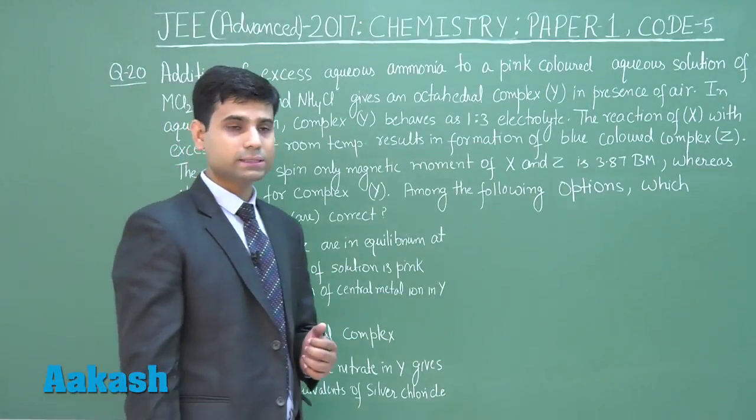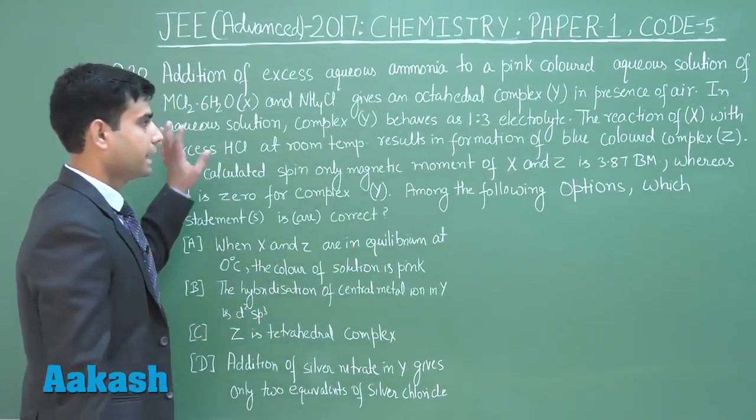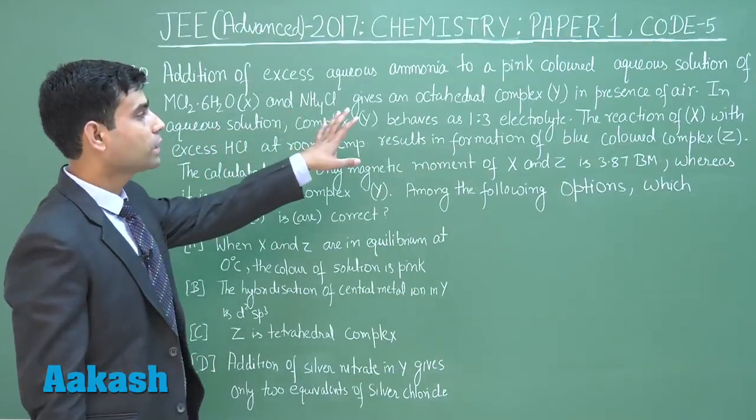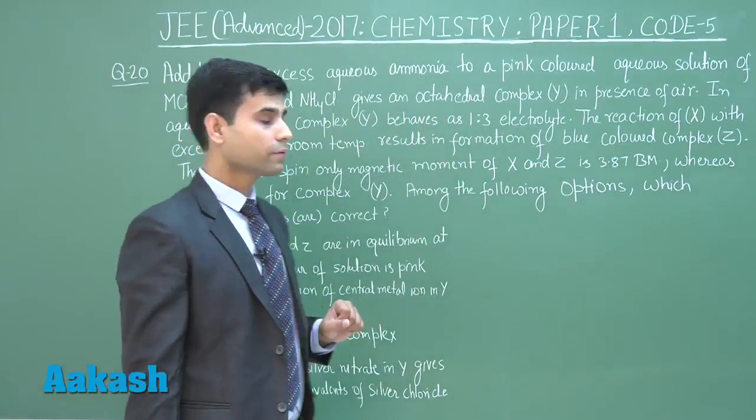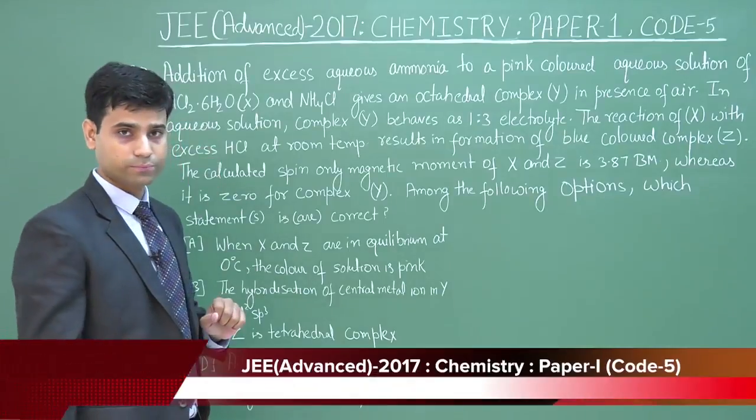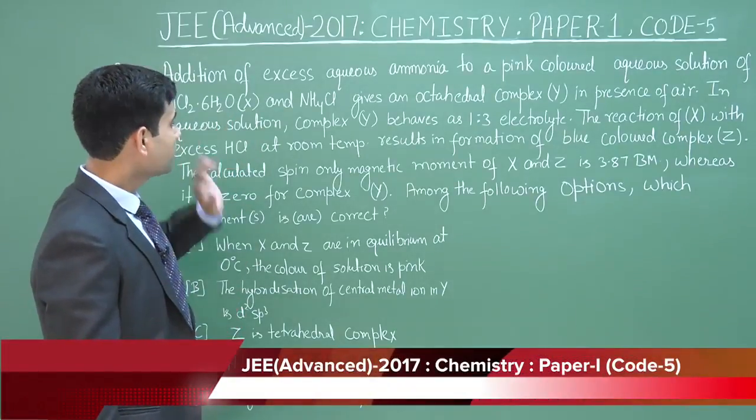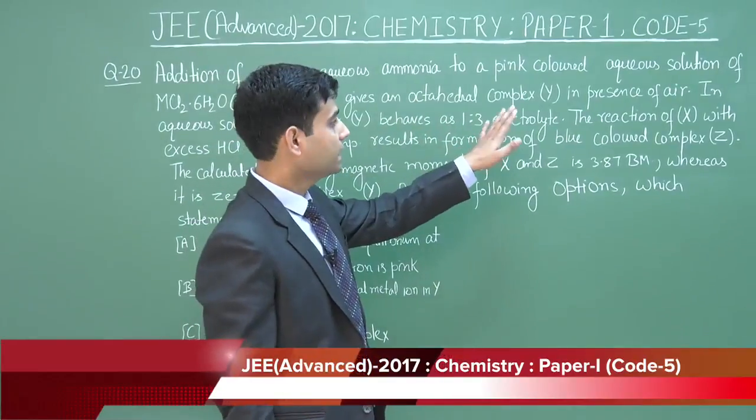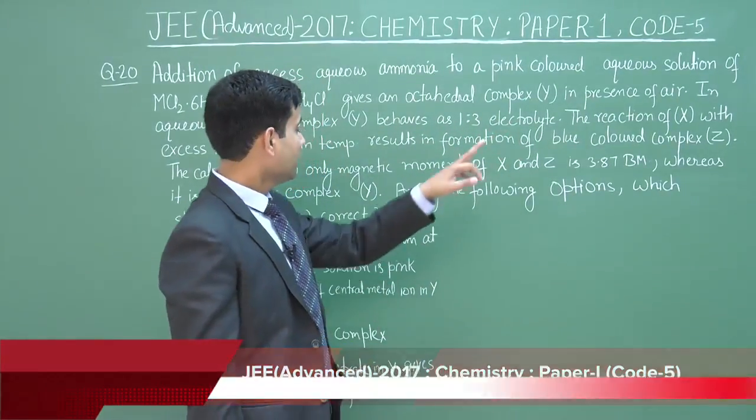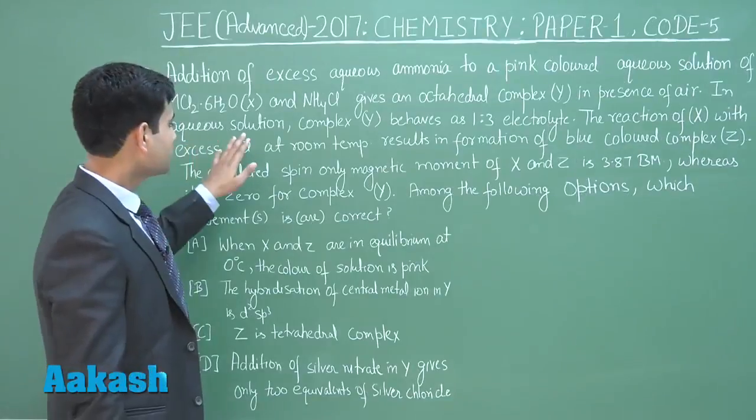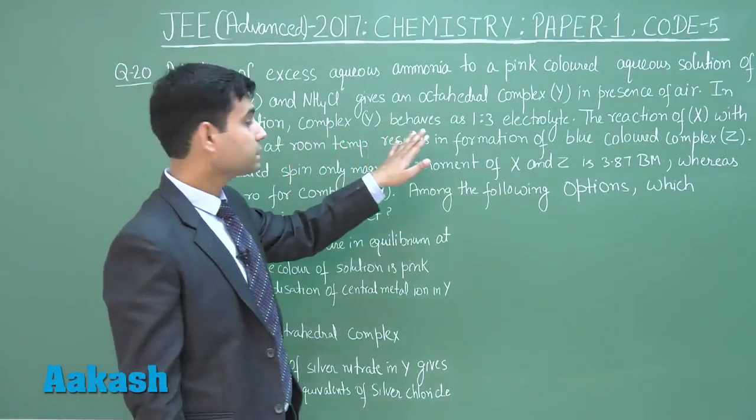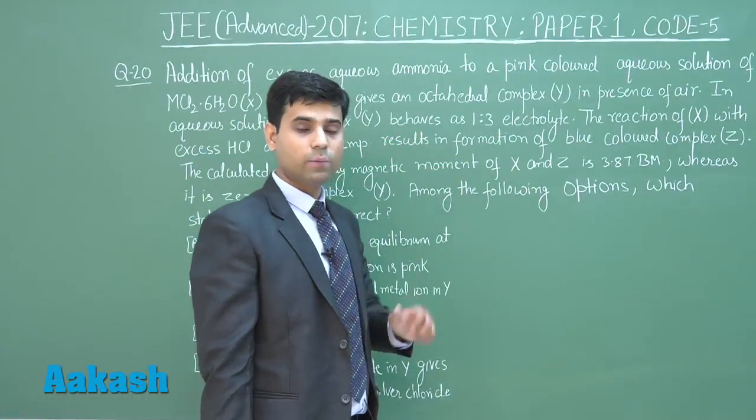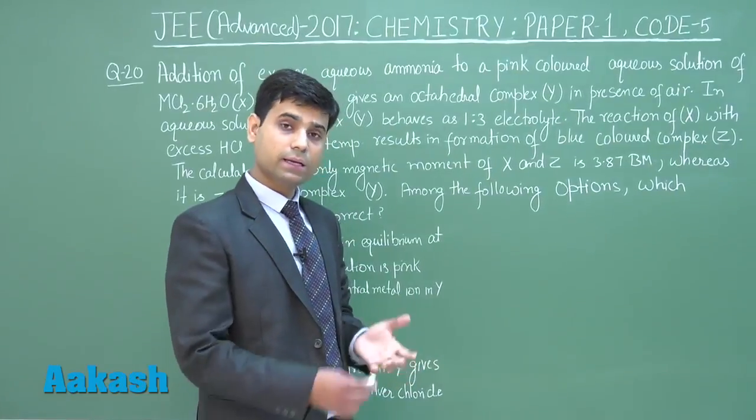Question number 20: Addition of excess aqueous ammonia to a pink colored aqueous solution of MCl2.6H2O (this is X) and NH4Cl gives an octahedral complex Y in presence of air. In aqueous solution, complex Y behaves as 1:3 electrolyte.